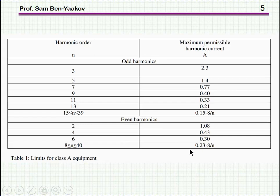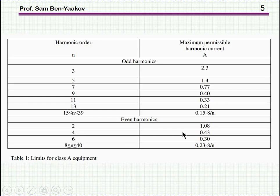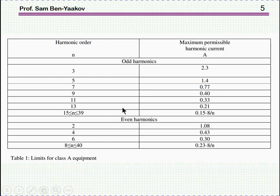Here is the table for class A. We see the harmonic order and the maximum permissible harmonic current. The third harmonic is 2.3 A, the fifth harmonic is 1.4 A, etc. For even harmonics, there are also some limits. Usually, if it's a balanced rectification, you will not have even harmonics, but limits are defined if they occur. 2.3 A is a fairly high current, so if the piece of equipment is low power — say 200, 300, or 400 watts — it's not that difficult to meet this standard. However, if the total power of the equipment is one or two kilowatts, then it becomes a little bit more difficult to meet the regulation.